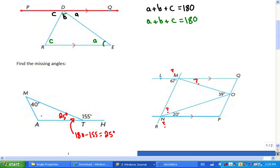So, 180 minus 155, which is 25 degrees. Then, the three angles in the triangle have to add up to 180. So, the missing angle is how big? Maybe 115?